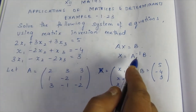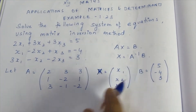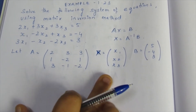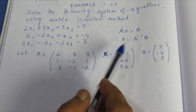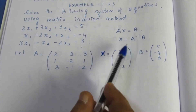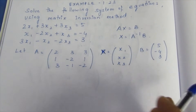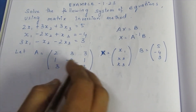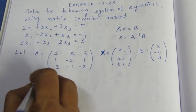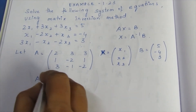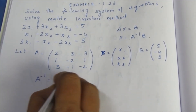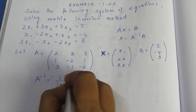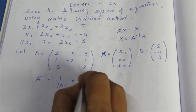X is equal to A inverse into B. Using the matrix inversion method, X = A⁻¹·B, where A⁻¹ = (1 / determinant of A) × adjoint of A.